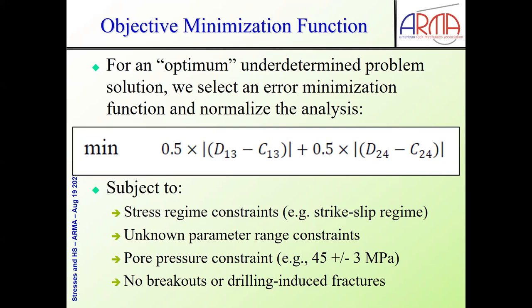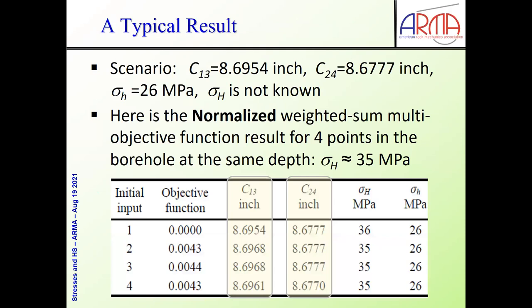The more you can constrain the optimization space, the faster it executes — at most minutes. If we have unknown parameters like Young's modulus, we also put constraints on that. The pore pressure in the rock, the mud pressure. We avoid all areas that have non-elastic evidence like breakouts or drilling-induced fractures. Everything is normalized because the difference between these two diameters is really, really small, but the elastic modulus is, say, 10 gigapascals — like eight orders of magnitude difference in the numbers. So we have to normalize everything so that everything is weighted appropriately. This is known in the optimization literature as the use of a normalized weighted sum multi-objective function.